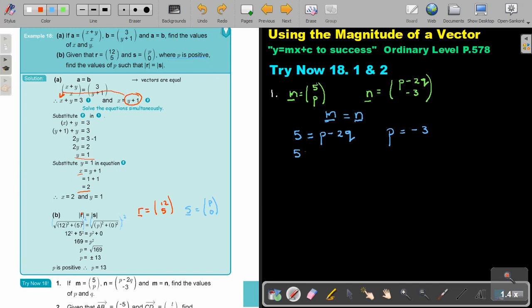So now I'm just going to substitute in the place I'm going to put negative 3. So 5 is equal to negative 3 minus 2Q. So 2Q is going to be negative 3.